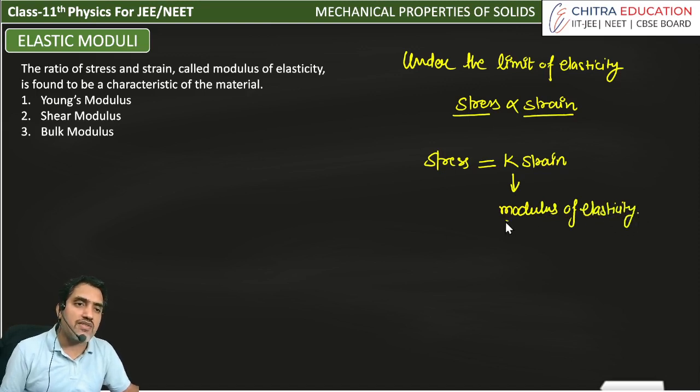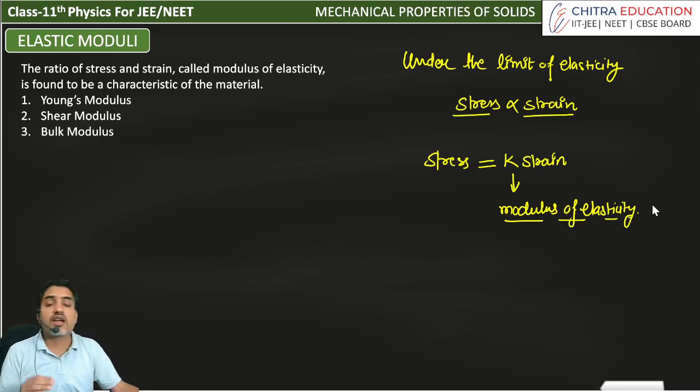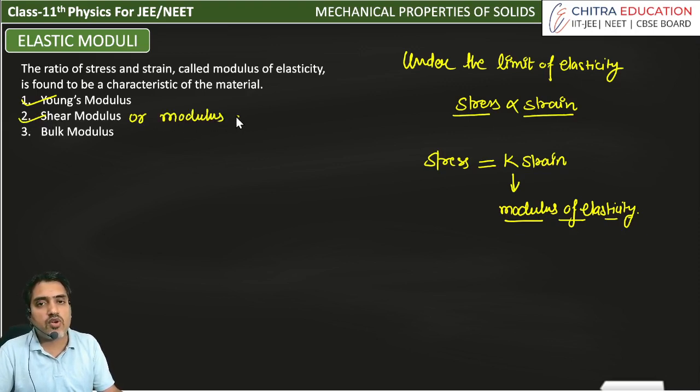We have divided this modulus of elasticity in different categories. When we talk about longitudinal strain and stress, then we will say Young's modulus. When we talk about shear strain, then we will say shear modulus or modulus of rigidity.